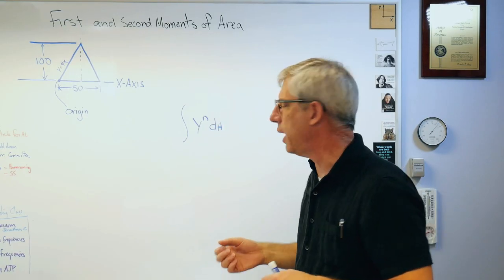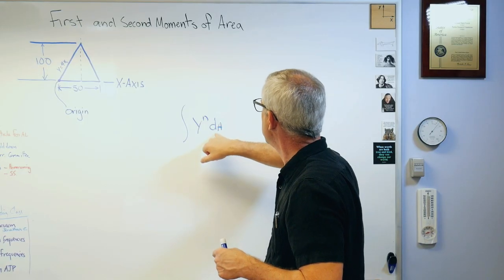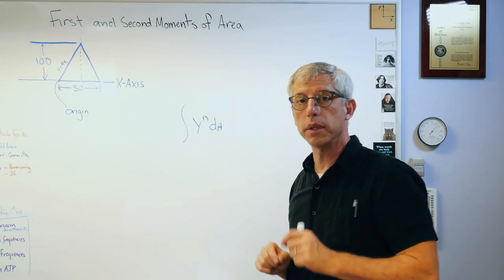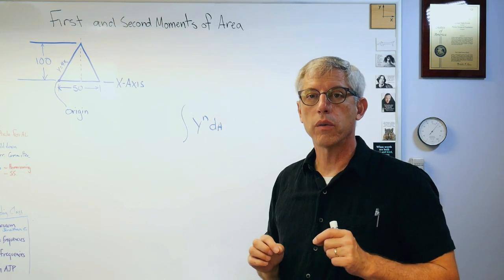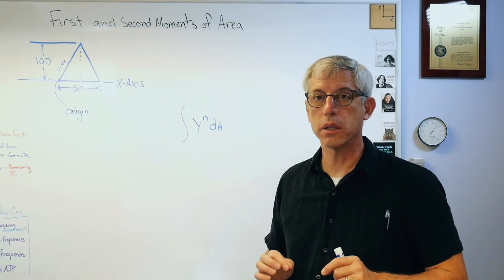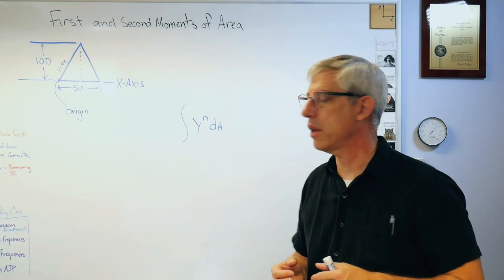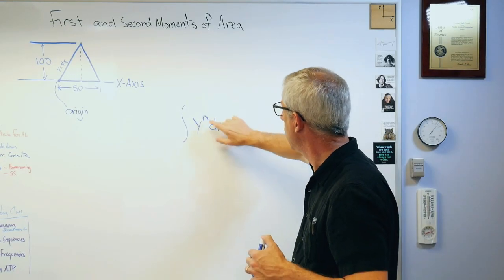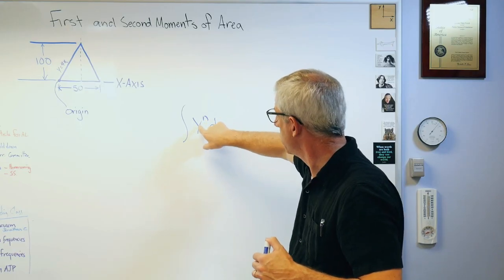A moment is a force times a distance. A moment of area would be an area times a distance. I could see that, that makes sense. And by the way, this da here implies that's a double integral. Mathematicians are real big on writing things as compactly and as precisely as possible, and I'm pretty much okay with that.